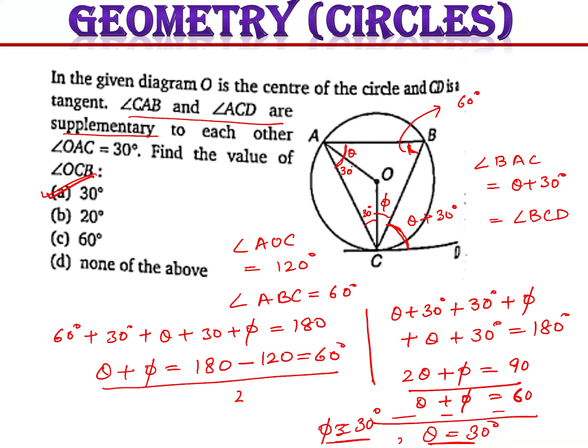Since both angles come out equal, triangle ABC is an equilateral triangle. Option A is the correct answer. I hope this question is clear to all.